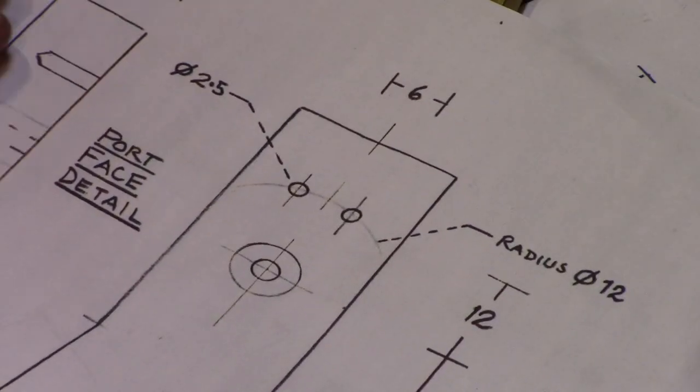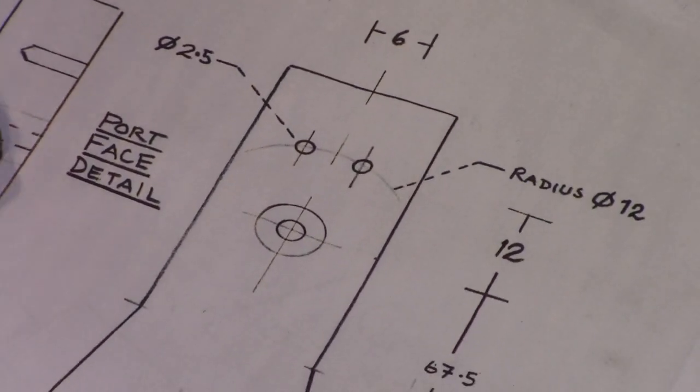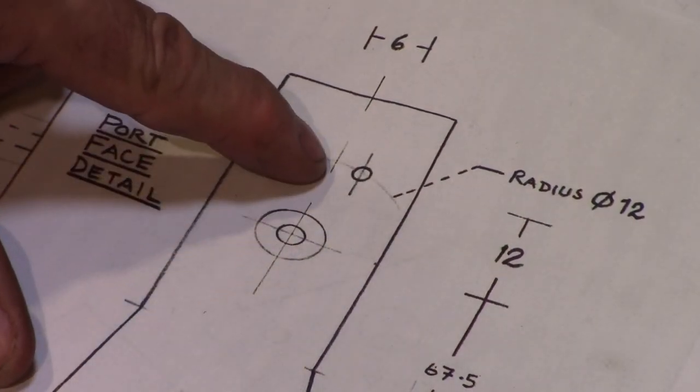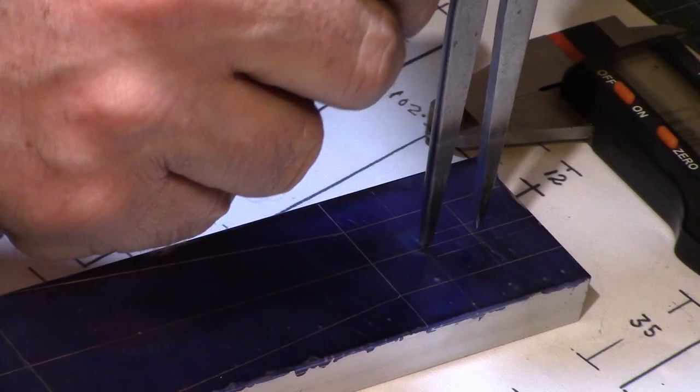The port face details on drawing 7 need to be positioned on a 12mm radius from the pivot point, so this is scribed with the help of dividers.